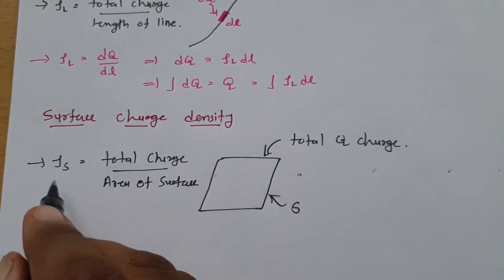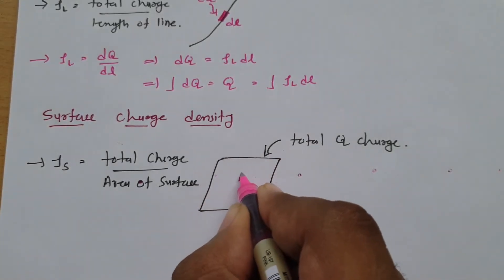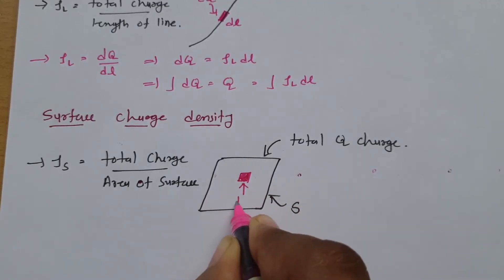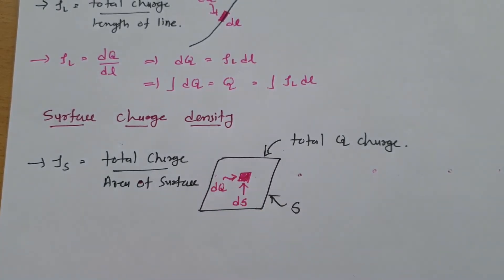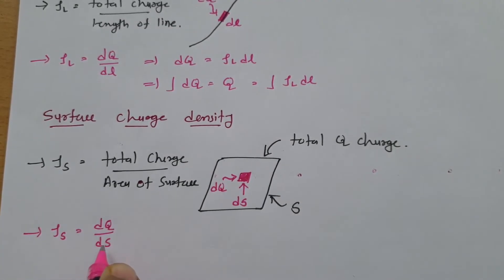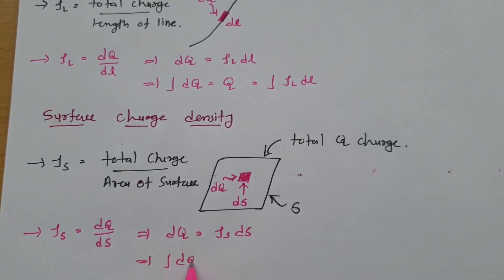Sometimes surface charge density is a function of coordinates, so to calculate total charge on the surface, we consider a very small differential surface dS. If dQ amount of charge is on this differential surface, then surface charge density ρS = dQ/dS. Rearranging, dQ = ρS dS, so total charge Q is the surface integration of surface charge density.